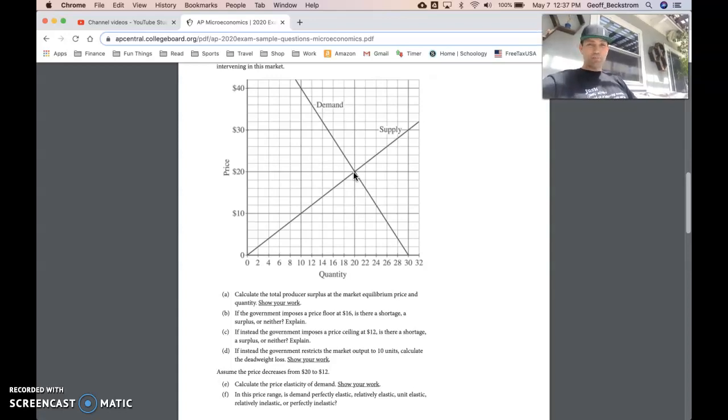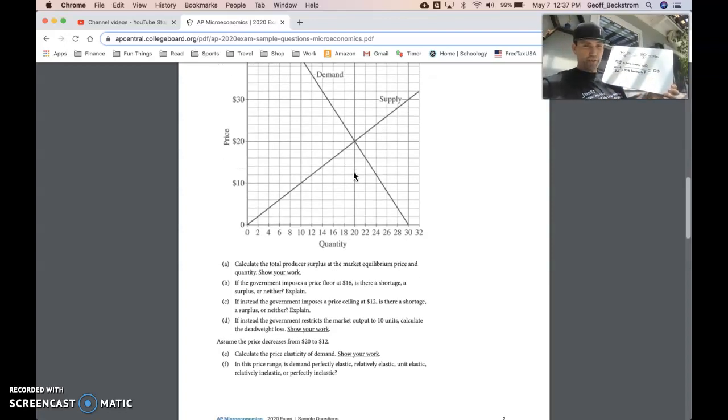Anyhow, so our percent change, and I've done the calculation here on the little board for you, our percent change is, so our difference, 24 minus 20 over 20, so we get a 20 percent increase in quantity, and 20 minus 12 is 8 divided by 20, so a 40 percent decrease in price. So 20 percent over 40 percent. Our elasticity coefficient is 0.5, which for part f means that it is a relatively inelastic portion of the demand curve.